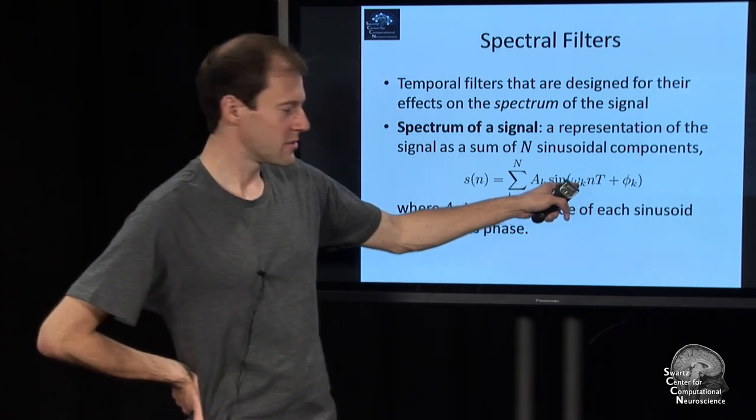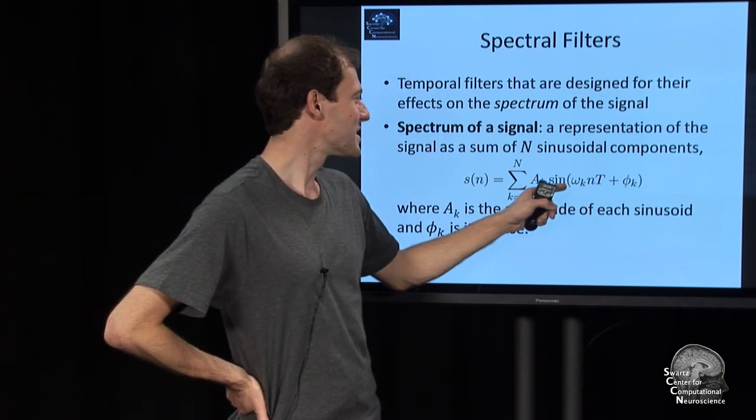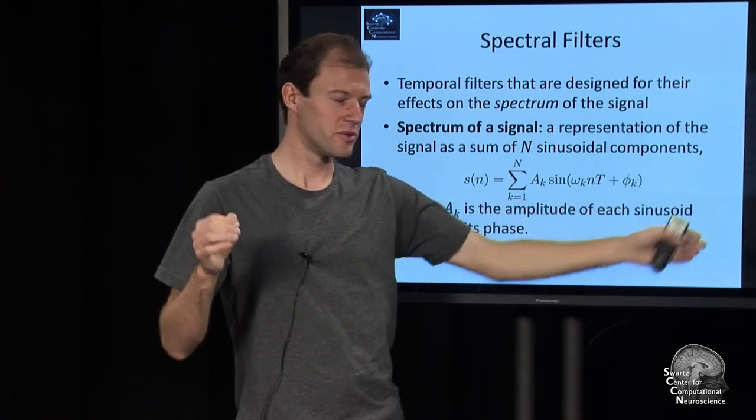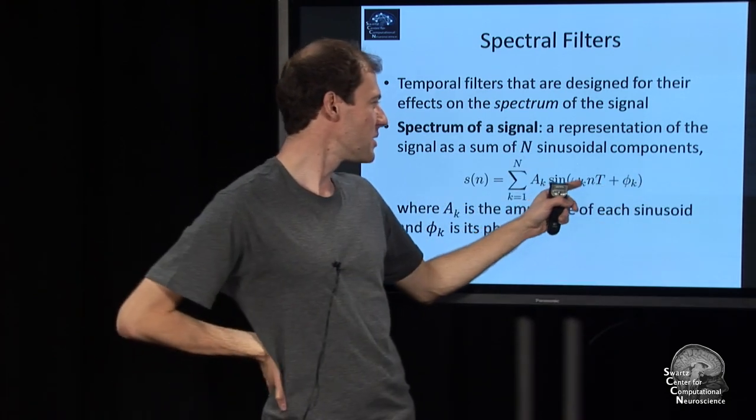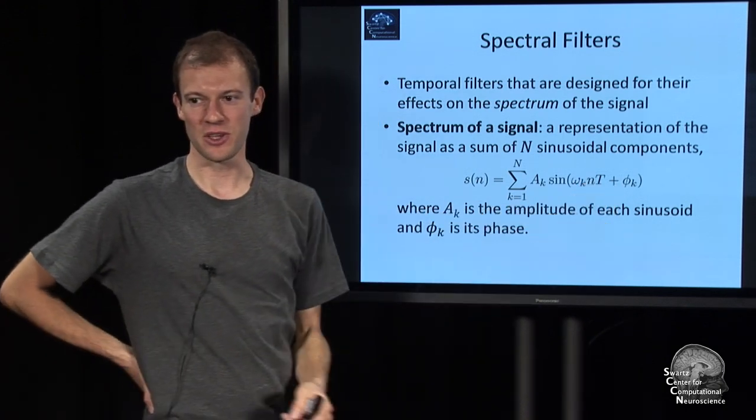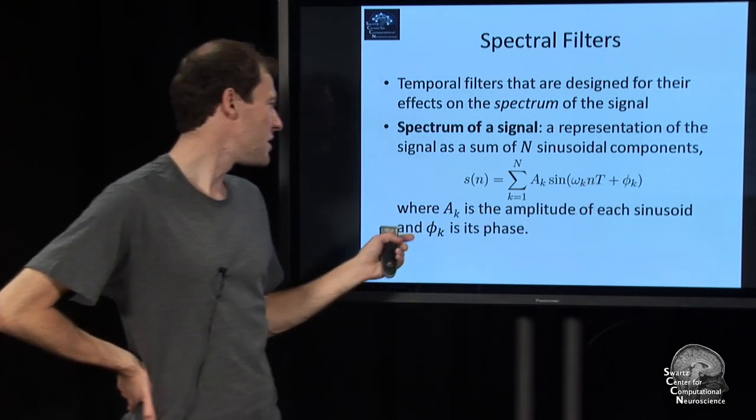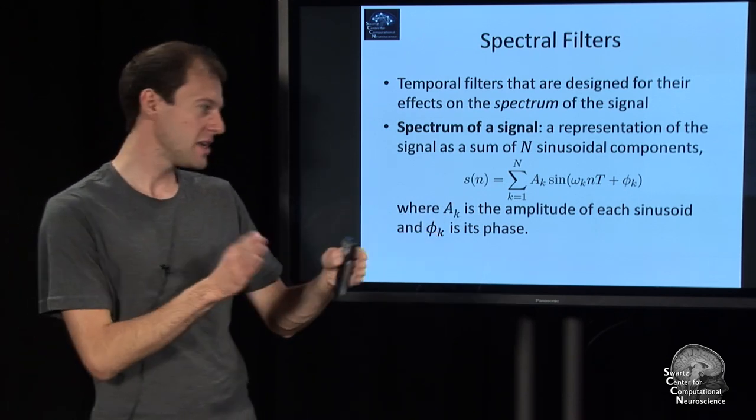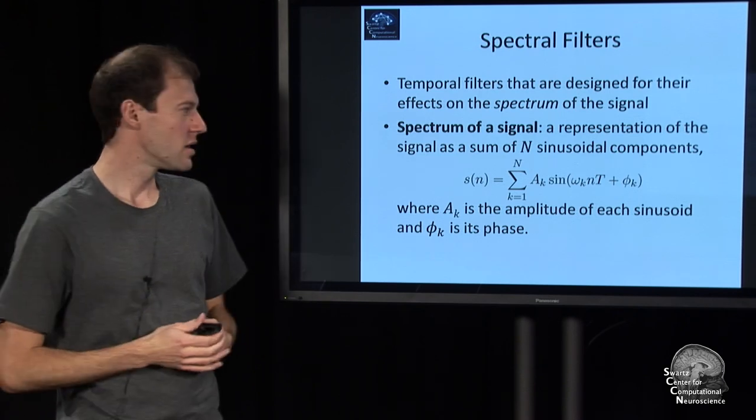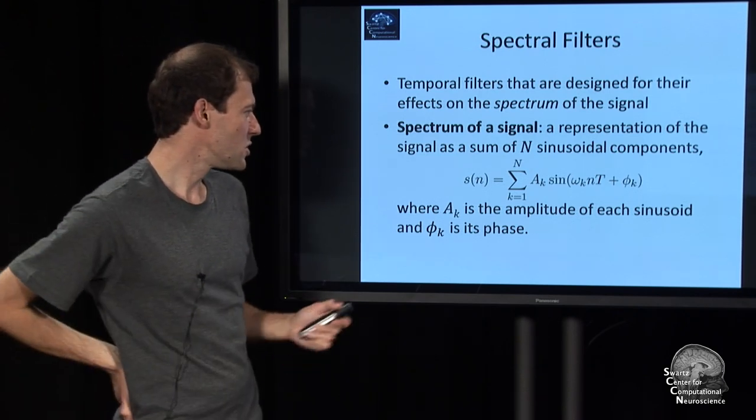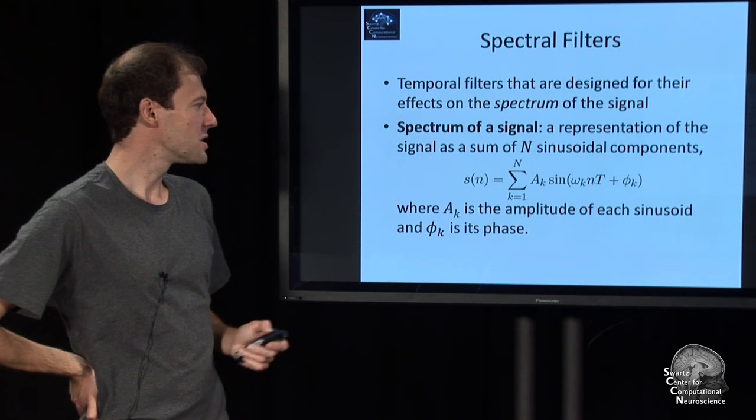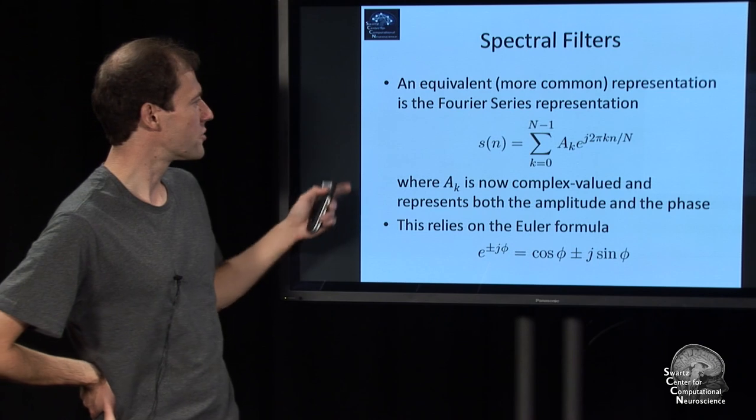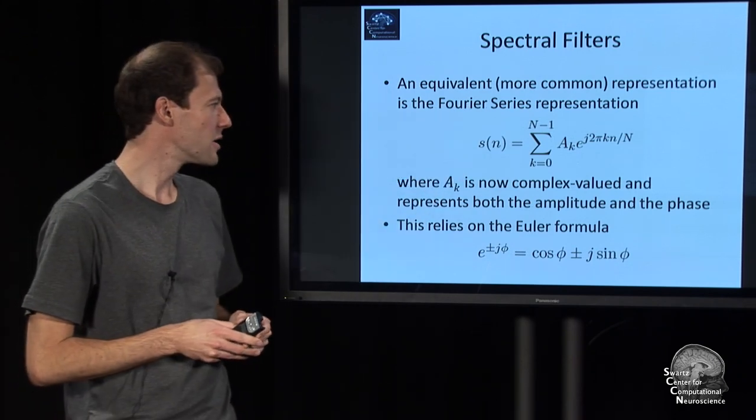Each of these components is a sinusoid multiplied by some amplitude, AK. Ignore this ωK, this should actually be K. It's indexed by n, so it is a sinusoid over time. And it has an offset, that's the phase. So the signal is defined by the coefficients AK and φK, the phase offsets and the amplitudes. So you can say a signal can be represented as that.